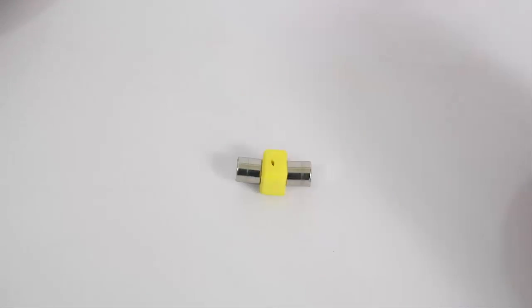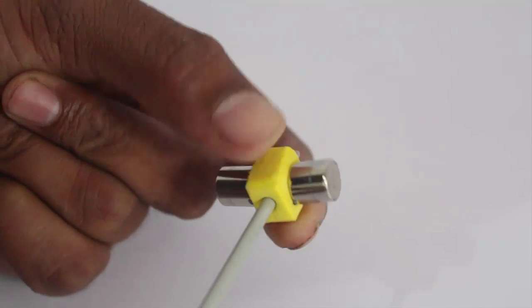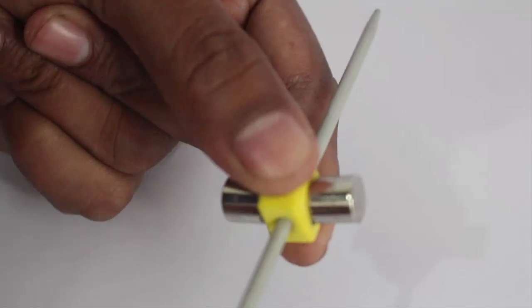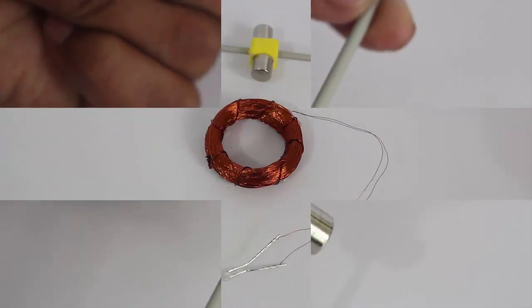Then stick two neodymium magnets, these are very strong magnets, to the ends of a rubber piece. Weave a knitting needle through this rubber.